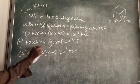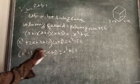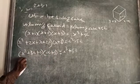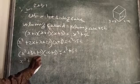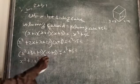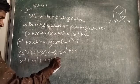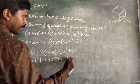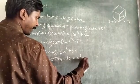Take x and multiply all three terms, then take 3 and multiply all three terms. So: x times (x² + 3x + 2) gives x³ + 3x² + 2x, and 3 times (x² + 3x + 2) gives 3x² + 9x + 6. This equals x³ + 52.